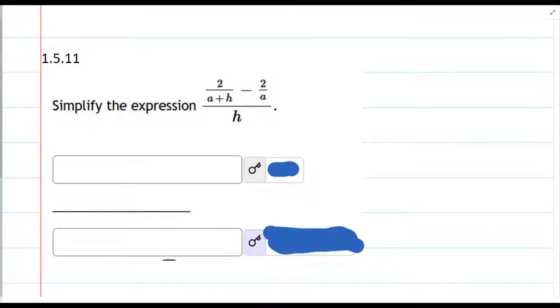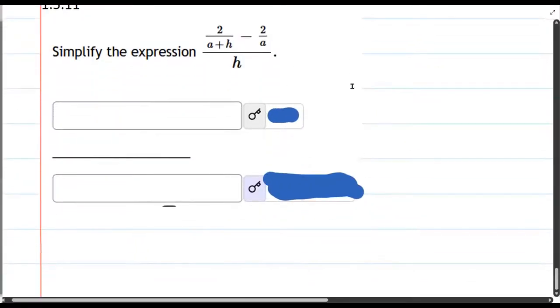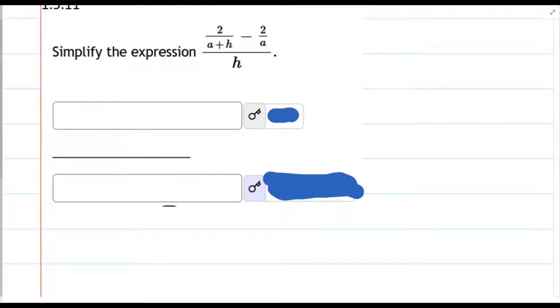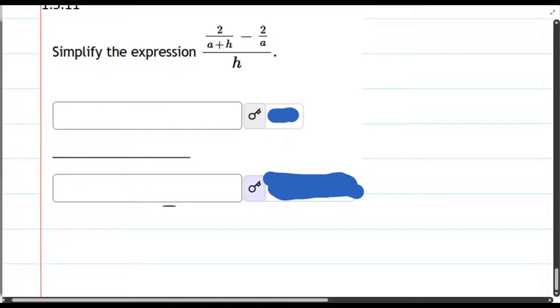So we're going to simplify this expression here, and what we need to do is add fractions with common denominator. There is no common denominator up here, so we're going to have to multiply each one by the other's denominator.